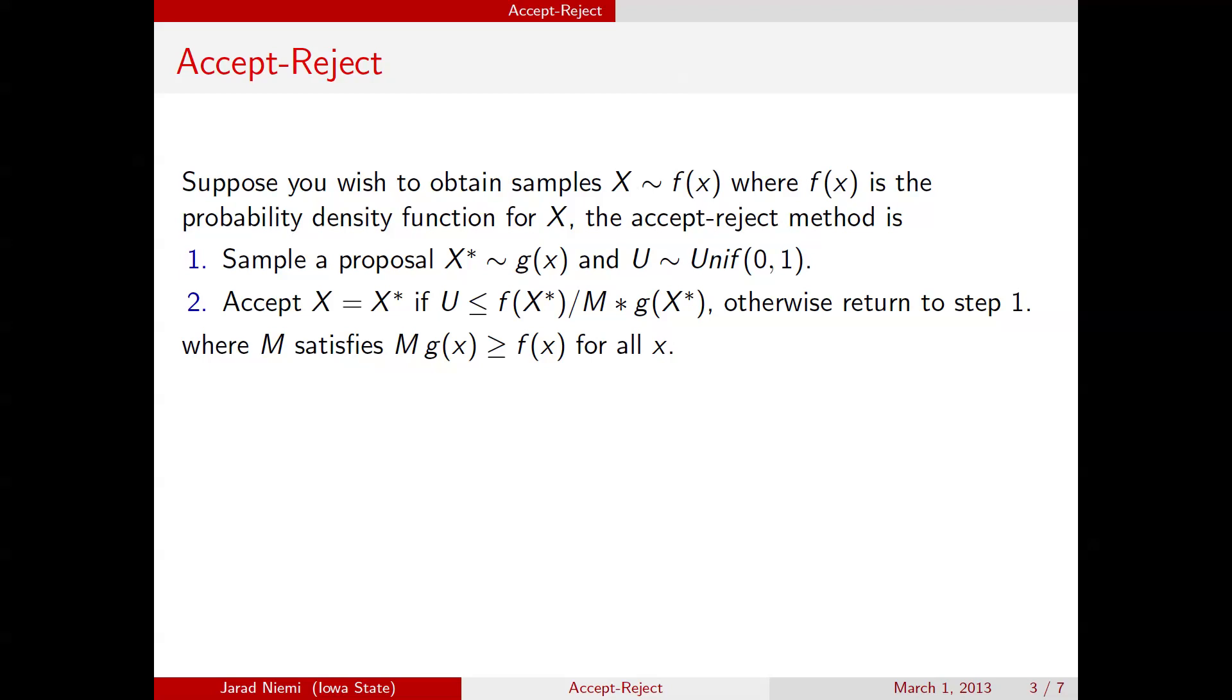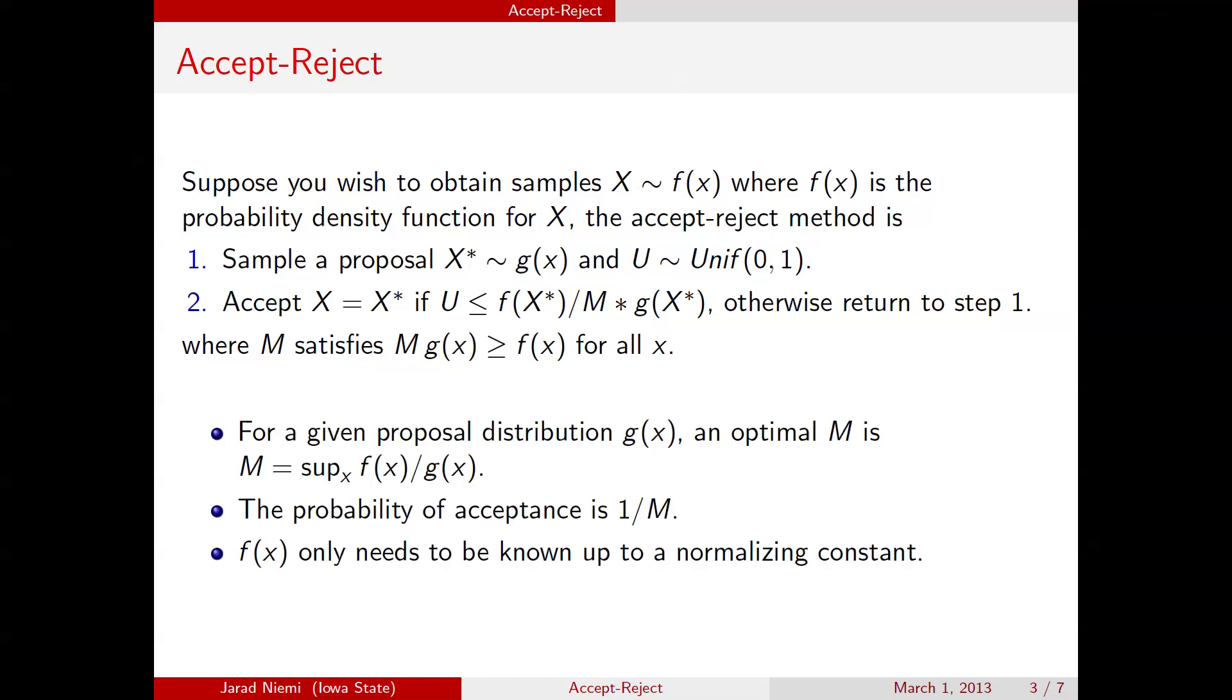So you might be asking, what is this m? m is a constant that satisfies the following inequality, that m times g, which is our proposal density, is greater than or equal to our target density f for all x.